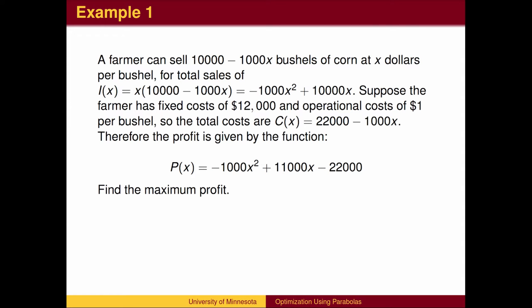Here is an example of a typical application. A farmer wishes to maximize profit. The profit function is given, and the coefficient on x-squared is negative, so the parabola opens downward. The vertex will be the maximum.